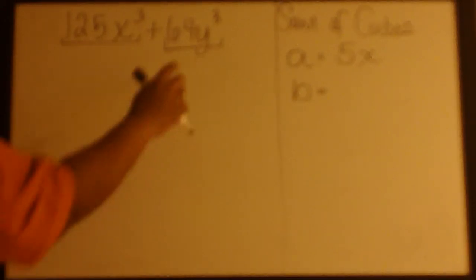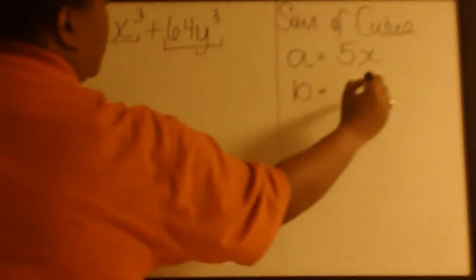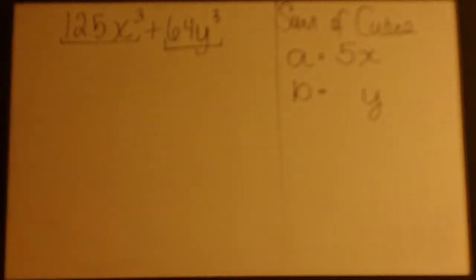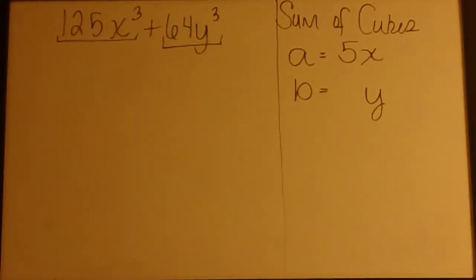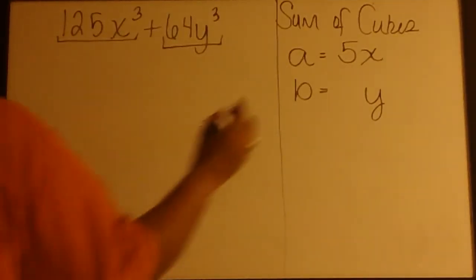In our second term, which we'll refer to as B, we know that the cube root of Y cubed is Y. And we found out in the last problem that the cube root of 64 is 4.